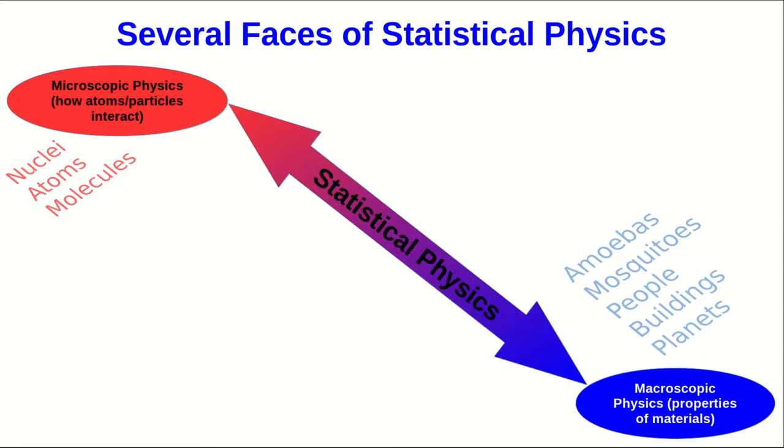So statistical physics makes a bridge between them so that you can use your knowledge of how atoms and particles interact to predict the properties of materials, or you can flip that around and use the much more easily measured properties of materials to tell you things about how the atoms and particles that the materials are made out of interact with each other.